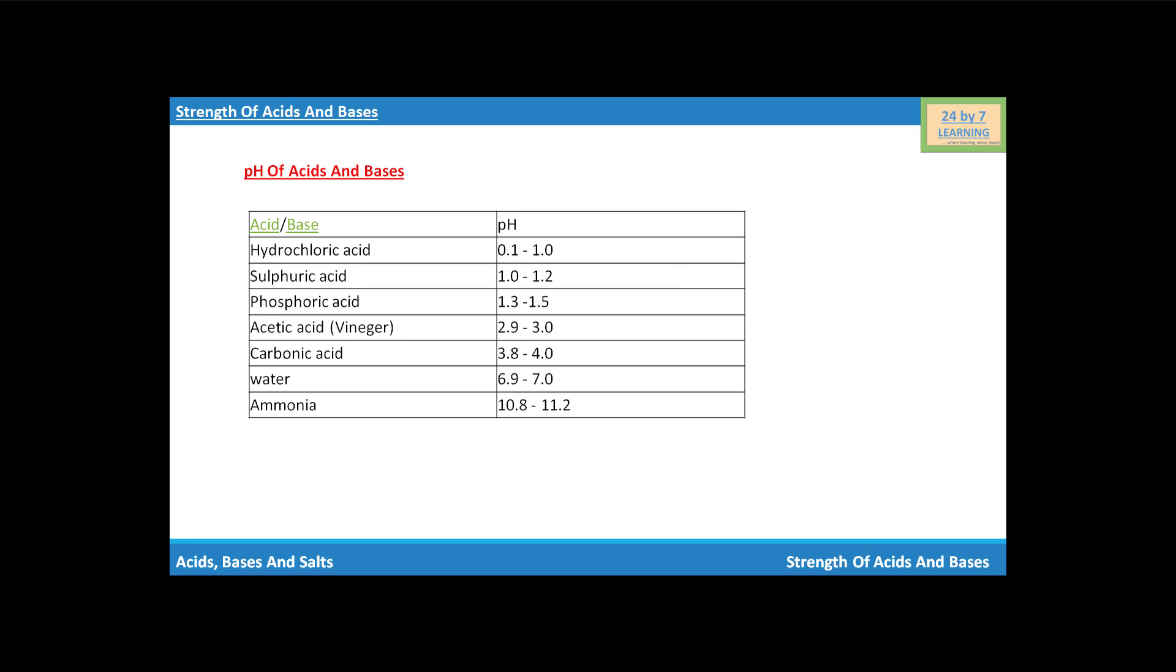In this table, here is given the pH of some acids and bases. You can see pH of hydrochloric acid will be between 0.1 to 1.0, while pH of sulfuric acid is from 1.0 to 1.2.